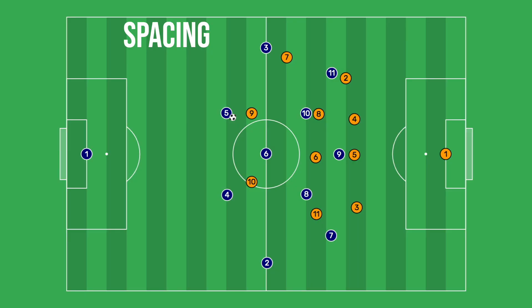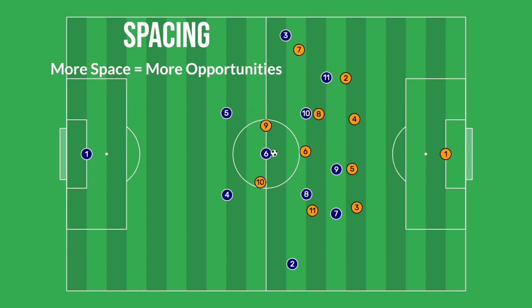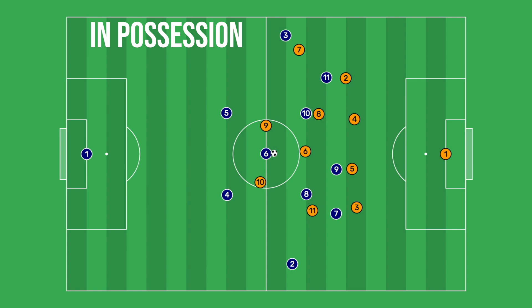Spacing is the positioning of players relative to the ball and other teammates. How a team spaces out determines how a team creates opportunities. Aside from the last 20 or so yards before a goal, there is typically no major threat of an immediate scoring chance. This means that for the first 80% of the field, the attacking team is trying to keep its options open to create the best possible scoring opportunity, while the defending team tries to limit the options available. When talking about the team in possession of the ball, spacing is used for two main reasons: to exploit space, or to open up space for teammates.